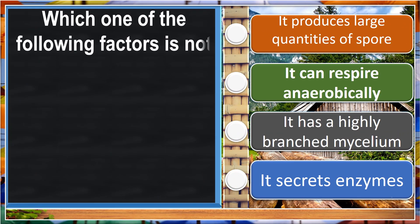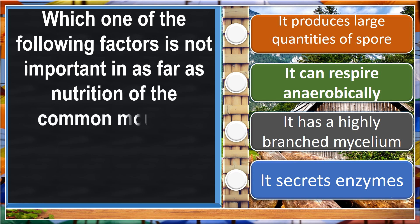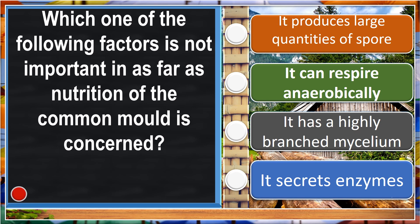Which one of the following factors is not important as far as nutrition of common moulds is concerned? It produces large quantities of spores.